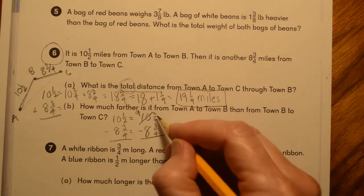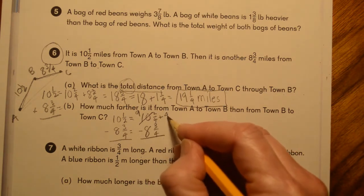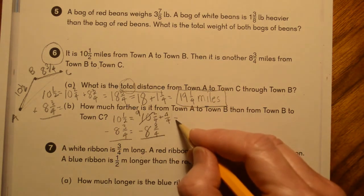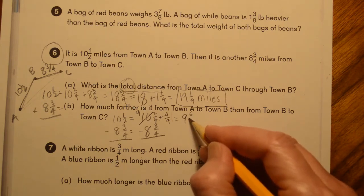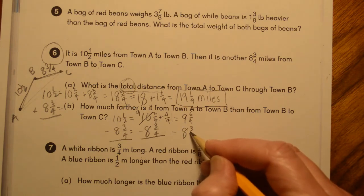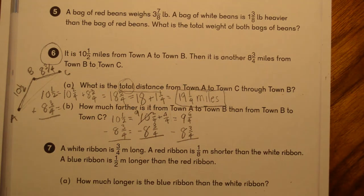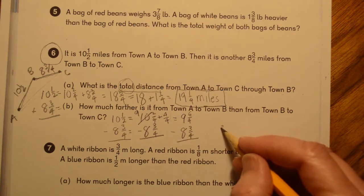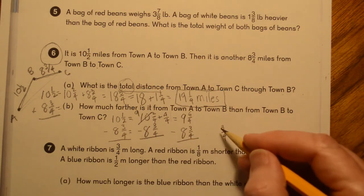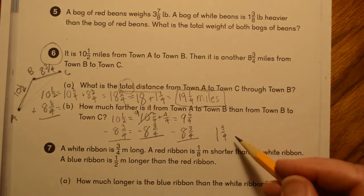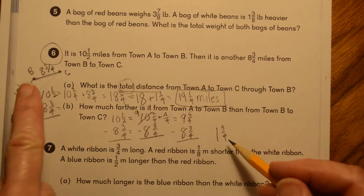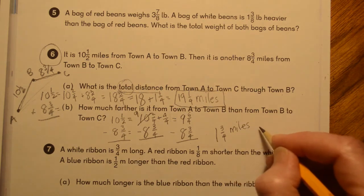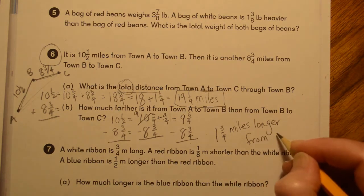So when you do that, we're going to give the one to this. I'm just going to give it to it as four fourths. So when we group these two together, the four fourths and the two fourths, we end up with nine and six fourths minus eight and three fourths. Six fourths minus three fourths just gives us three fourths. And then nine minus eight is one. So it is one and three fourths miles further to get from A to B than it is to get from B to C. So one and three fourths miles longer from A to B.